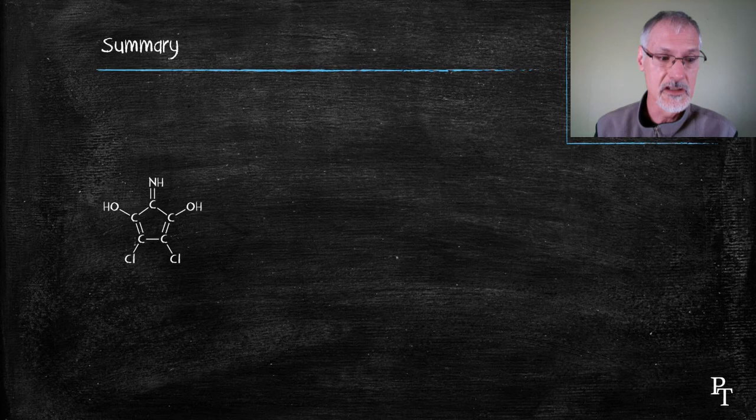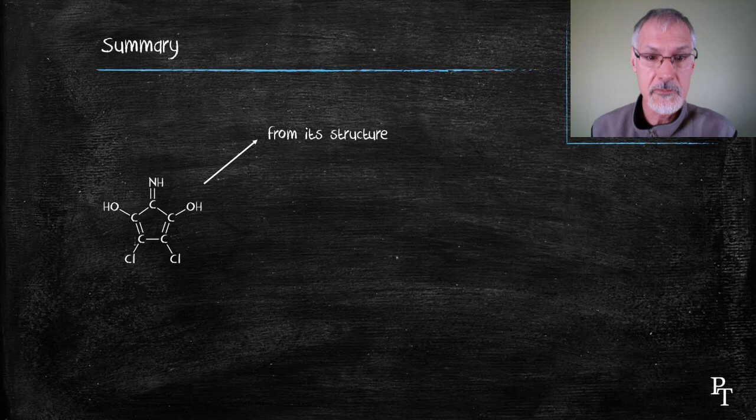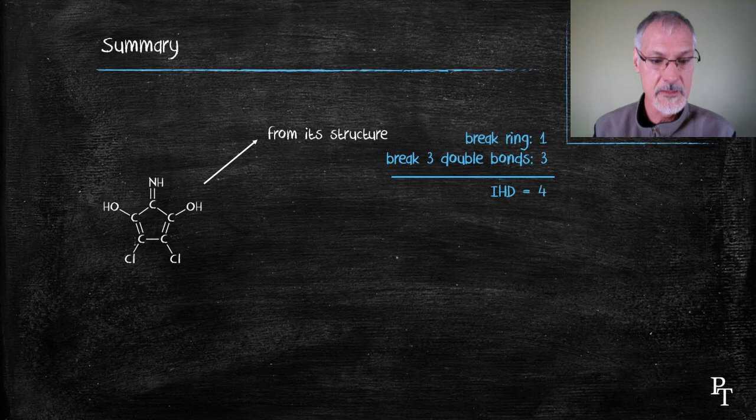So to summarize, we need to be familiar with both methods of calculating the IHD. One would be from its structure. And again, looking at this one, I have to break a ring. I have to break three double bonds. I would predict an IHD of four in this compound and from its chemical formula.